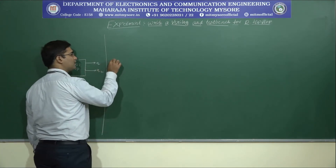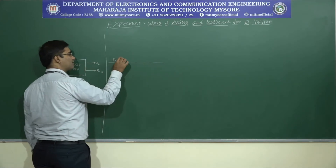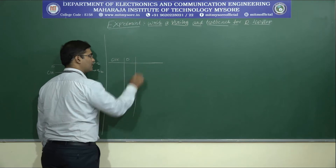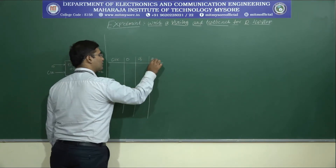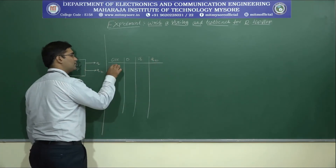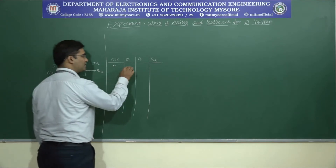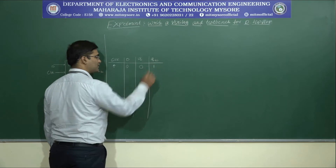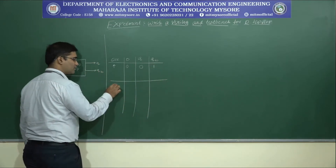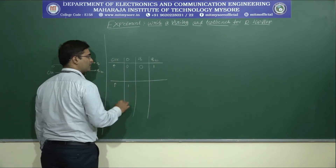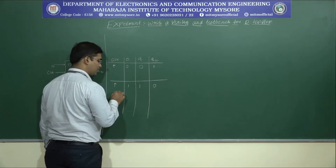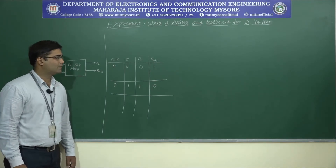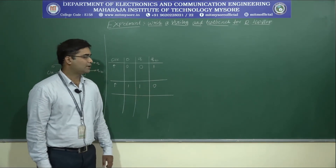We will write the truth table. The inputs are D and clock: clock, D, Q, Q-bar. At the positive edge of the clock, when D is 0, Q is 0 and Q-bar is 1. At the positive edge of the clock, when D is 1, Q is 1 and Q-bar is 0. According to this functionality we will convert this into a Verilog code.